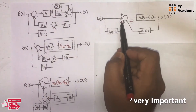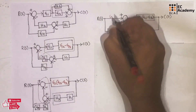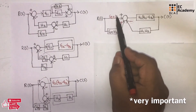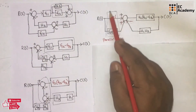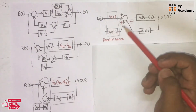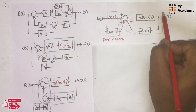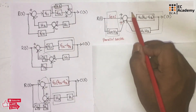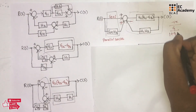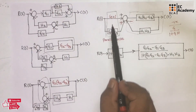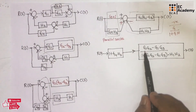In this simplified block, along the forward path we don't have any block, so we take G equal to 1. With G equal to 1, these two act as parallel blocks, so we apply the parallel formula. Here we can use the transfer function of a simplified closed-loop system with negative feedback: G divided by (1 plus GH). After simplifying these two blocks, we have written it as (1 plus G4·H2). The other two blocks are simplified and written as G1·G2 minus G1·G3.